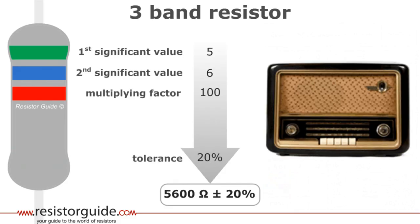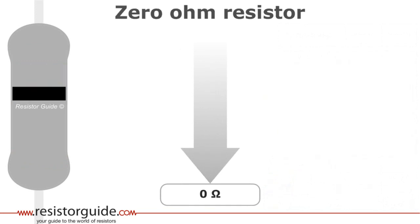Nowadays, this is nearly not used anymore. For example, in antique radios you can find three band resistors. Lower than three bands does not exist, with one exception. A zero black band. This is also called a zero ohm resistor.